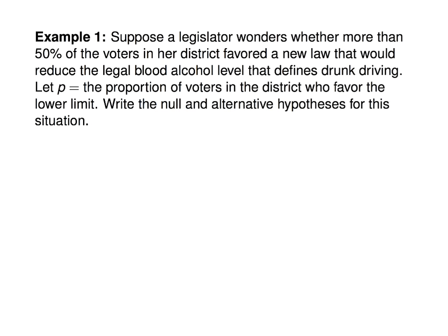First, let's review how to write a null and alternative hypothesis. Suppose we have a legislator who wonders whether more than half of the voters in her district favored a new law that would reduce the legal blood alcohol level that defines drunk driving. We suppose that P is the proportion of voters in the district who favor this lower limit. The null hypothesis would be that the proportion who favor the proposal is less than or equal to 0.5 — the 'or equal to' always goes with the null hypothesis. H-A is that the proportion who favors this new legal limit is greater than 0.5.